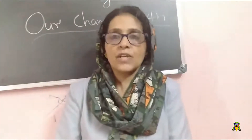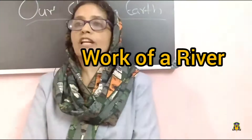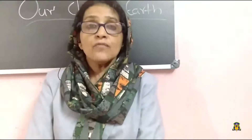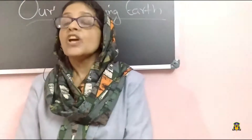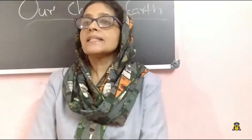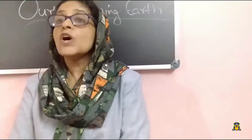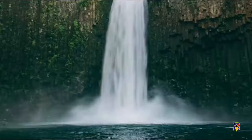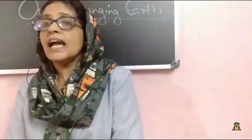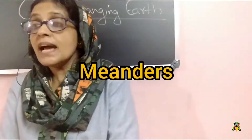Let us discuss the work of the river. The running water in the river erodes the landscape. When the river tumbles at a steep angle over very hard rocks or a steep valley, it forms a waterfall. As the river enters the plain, it twists and turns, forming large bends known as meanders.